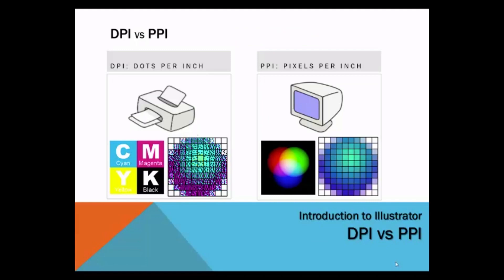DPI and PPI are terms that are sometimes used interchangeably. DPI, dots per inch, refers to actual printed media. For example, inkjet printers print dots of color, which our eyes then perceive as solid colors. Inkjet prints are described with dots per inch. Pixels per inch refers to monitors and screens — the pixels per inch that make up the resolution of the monitor and create images on the screen.